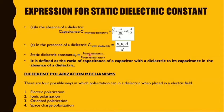There are four possible ways in which polarization can occur in a dielectric when placed in an electric field. First is electronic polarization, second is ionic polarization, third is orientation polarization, and fourth is space charge polarization. For remembrance, you can use the mnemonic EIOS: E for electronic, I for ionic, O for orientation, and S for space charge polarization.